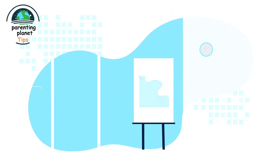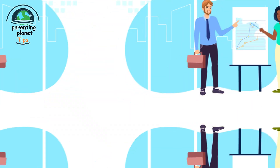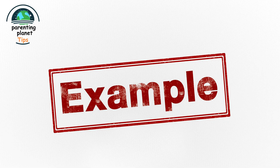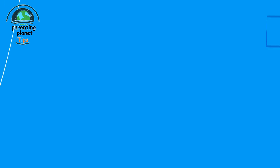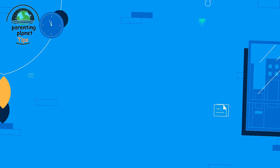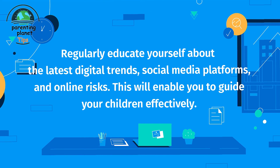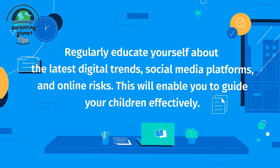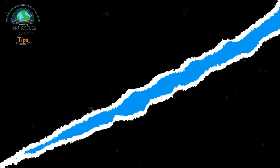Lead by example: Demonstrate responsible digital behavior yourself. Children are more likely to follow rules and guidelines if they see their parents adhering to them as well. Stay informed: Regularly educate yourself about the latest digital trends, social media platforms, and online risks. This will enable you to guide your children effectively.